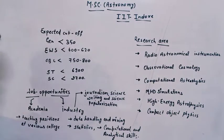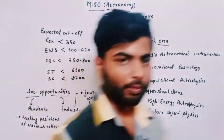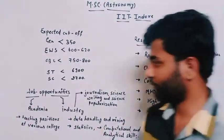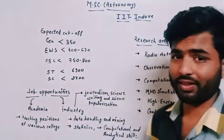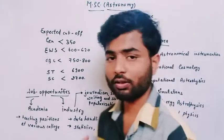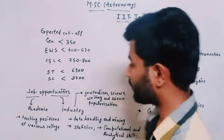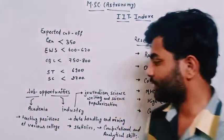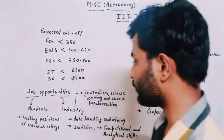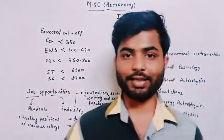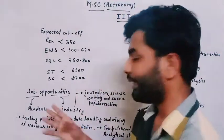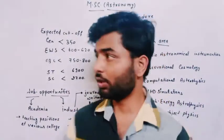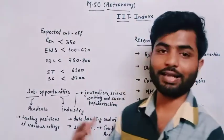Now we discuss job opportunities provided by this MSc physics or astronomy course. First is academia — the most common position for a master's in physics or astronomy. In academia you can teach in colleges, schools, or universities, apply for NET, and become an assistant professor. You can also go into higher research at institutes focused on astronomy or cosmology, like IIA (Indian Institute of Astrophysics), IUCAA Pune, or IMSC Chennai.